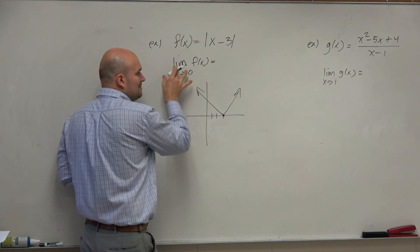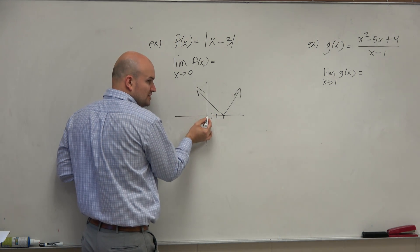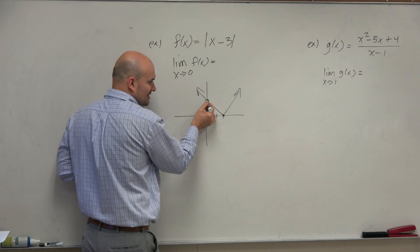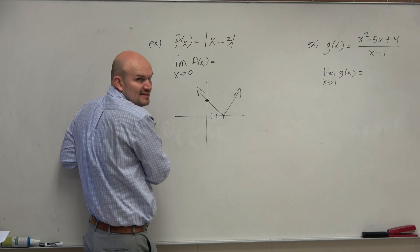Now, with the value saying limit as x approaches 0 of f of x, they're basically saying, what is the value of the graph as we're approaching x equals 0? Well, that's going to be like that dot right there, right? So what is that value? How do we find that value?